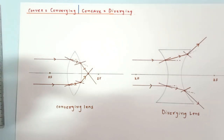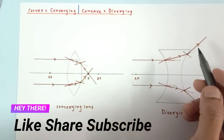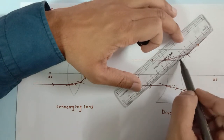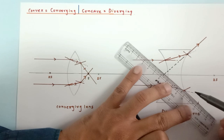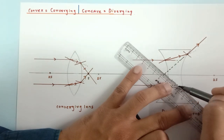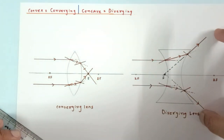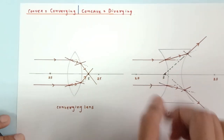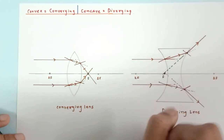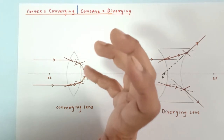The most interesting thing is how do we identify the focus. Where the parallel rays meet, that point is called the focus. For the concave lens, the parallel rays are not actually meeting, so if we extend them backwards we get the focus. The location of focus is not perfectly shown here because I made the lens quite thick, but the purpose was just to explain why lenses are converging and diverging.